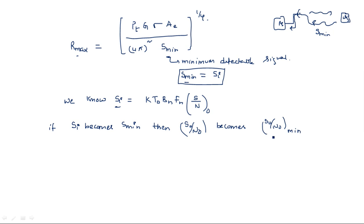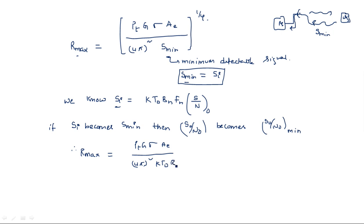If the input signal is the minimum detectable signal, then the signal-to-noise ratio is also the minimum signal-to-noise ratio. Therefore, Rmax in terms of noise figure is written as: Rmax = [Pt·G·σ·Ae / (4π)² × KT₀BN·Fn·(S₀/N₀)min]^(1/4). This is the final equation incorporating the noise figure.